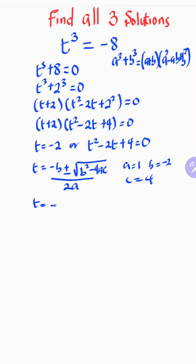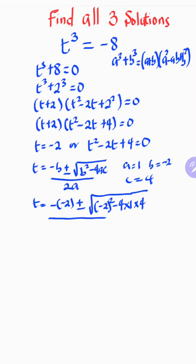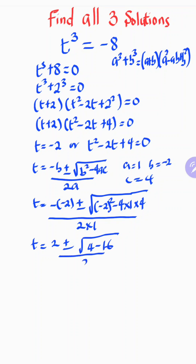Plugging in these values, t equals negative negative two, plus or minus the square root of negative two squared minus four times one times four, all over two times one. Simplifying: two plus or minus the square root of four minus sixteen, over two, which gives two plus or minus the square root of negative twelve, over two.